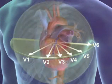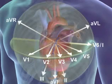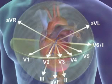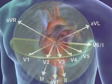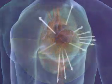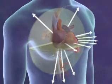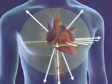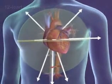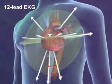Together, the frontal and horizontal plane electrodes provide 12 separate views, creating 3D information about the heart's electrical activity. This is called a 12-lead EKG.